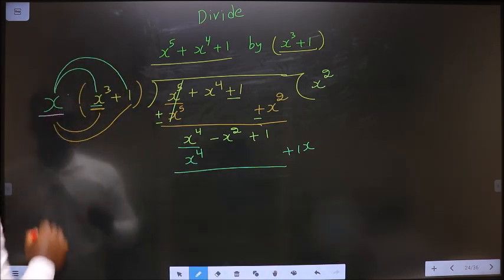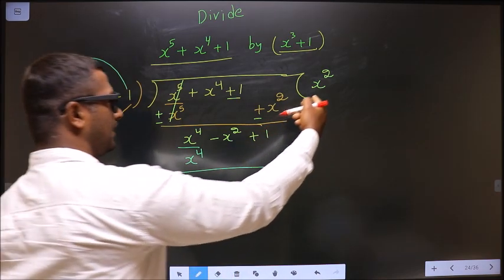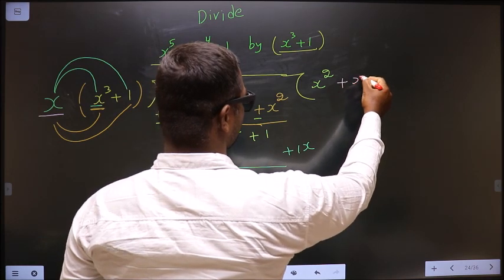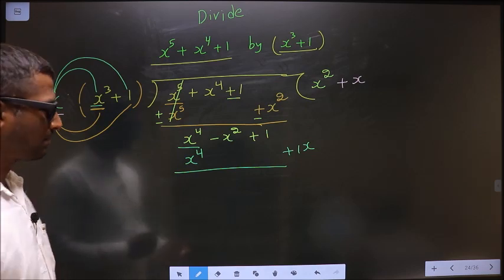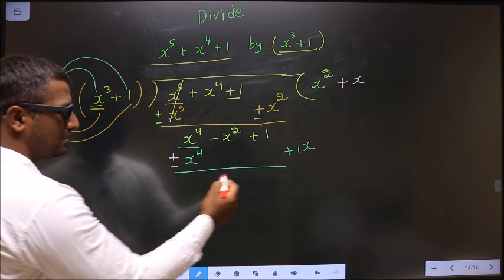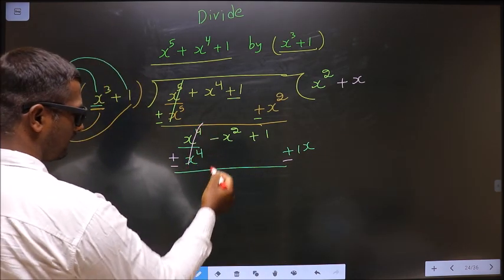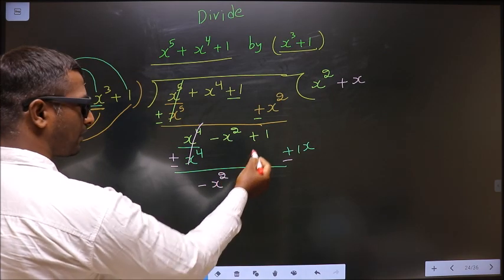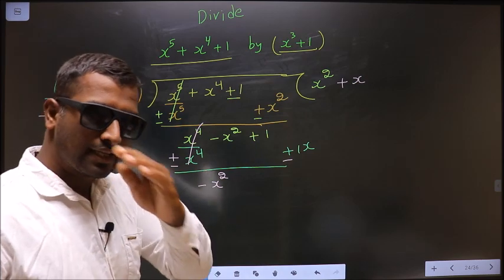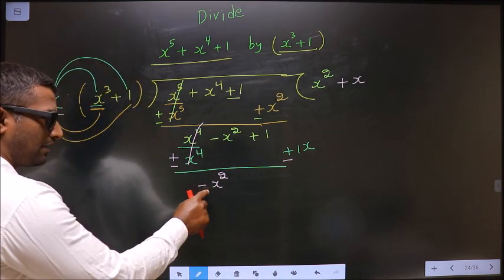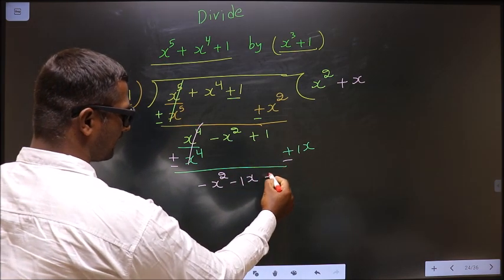This becomes your next term of the quotient. So write it in the quotient: plus x. Now change the signs. Here it is plus, make it minus. Here it is plus, make it minus. Now this cancels out. Minus x square, I write here. Don't write plus 1. This expression, we should write in the decreasing powers of x. After x square, I write the x term, and finally the constant.